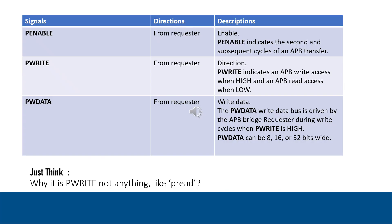The next signal is PENABLE. It is an enable signal generated from the requester. PENABLE indicates the second cycle of the APB transfer. The next signal is PWRITE — a direction signal also generated from the requester. PWRITE indicates whether it is a write or read operation. When PWRITE is high, there is write access; when PWRITE is low, there is read access.